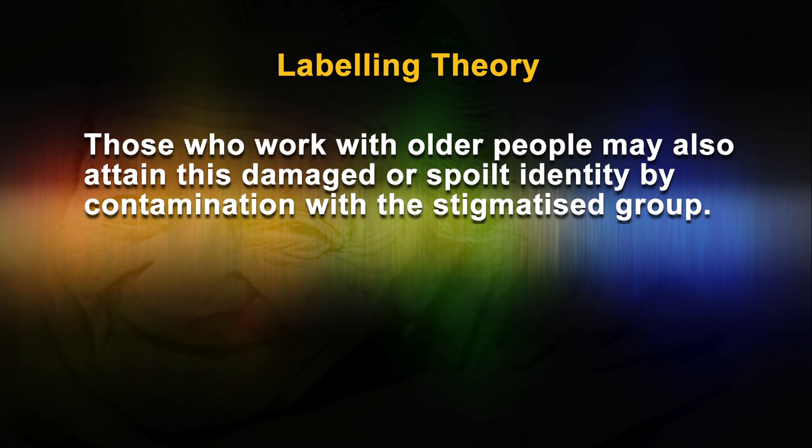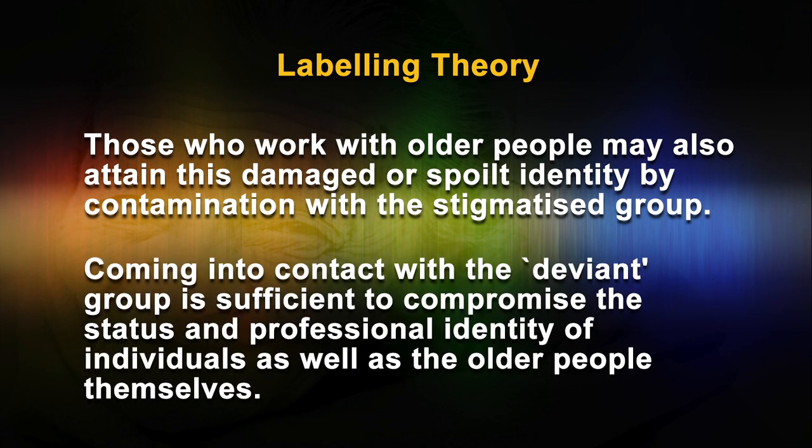Labeling Theory: It has been suggested that old age may usefully be conceptualized within the framework of the labeling theory of deviance. Labeling theory suggests that other groups attribute social status to individuals or groups by the successful application of negative labels to confer stigma or deviant status. In a youth- and health-conscious society, old age may be defined or labeled as a deviant and stigmatizing condition. Indeed, those who work with older people may also attain a damaged or spoiled identity by contamination with the stigmatized group.